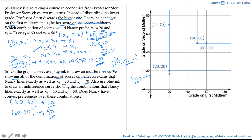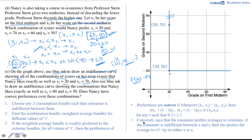This indifference curve shows all combinations Nancy likes exactly as well as x1=60 and x2=50. The next part asks whether Nancy has convex preferences. Both indifference curves depict the same preferences — one corresponds to (20, 70) and the other to (60, 50). So if we can verify convexity for one, it applies to both.